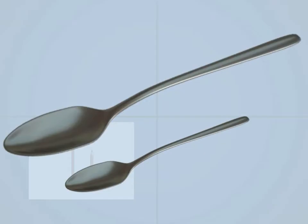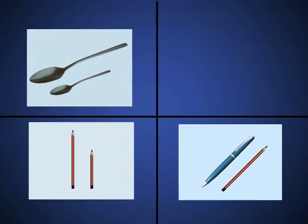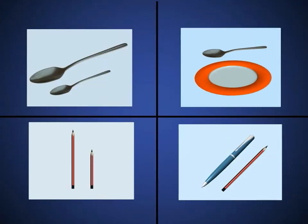Two objects of similar type are called like objects, whereas two objects of different types are called unlike objects.